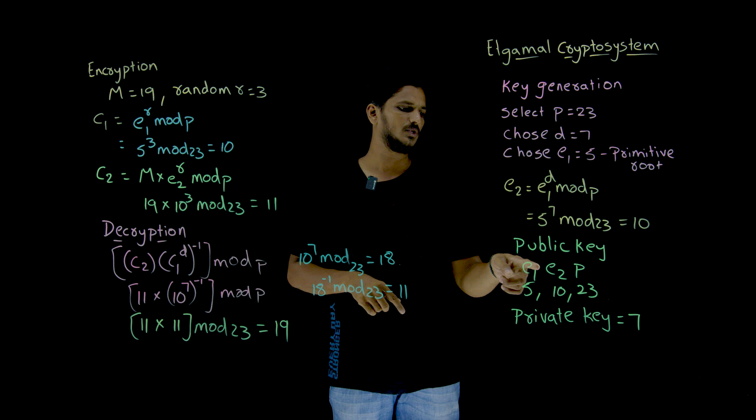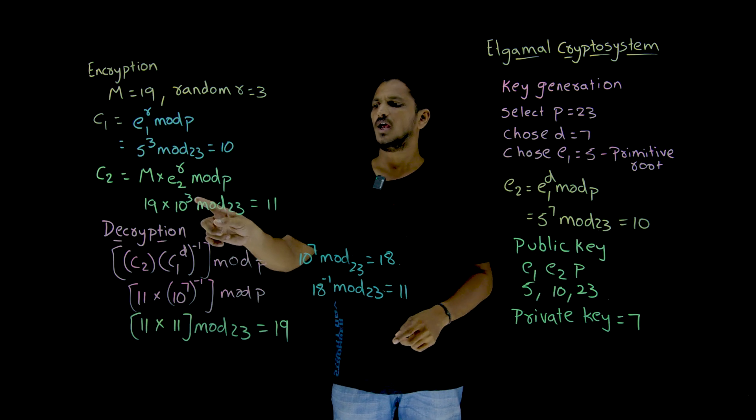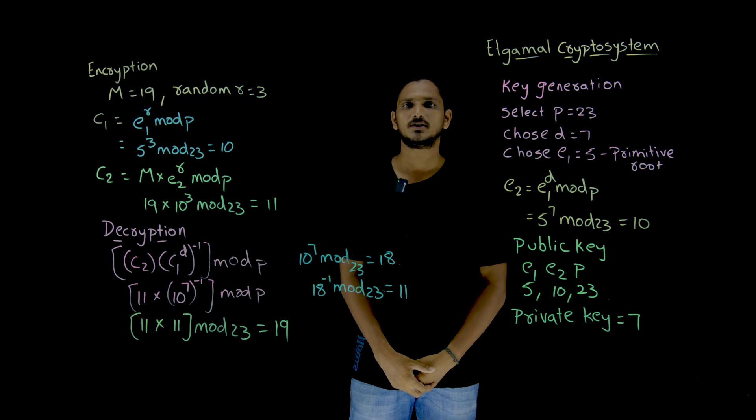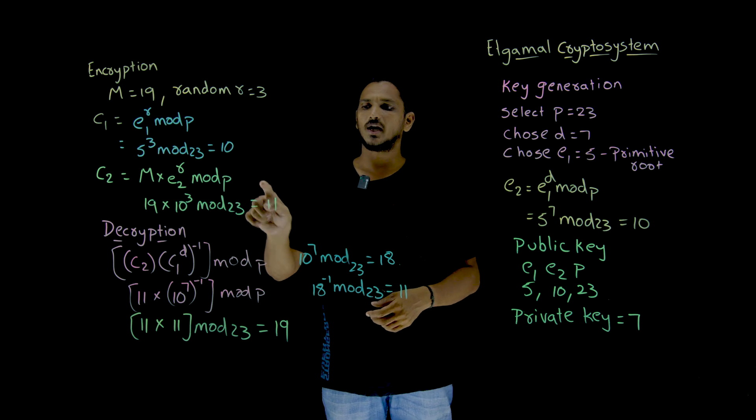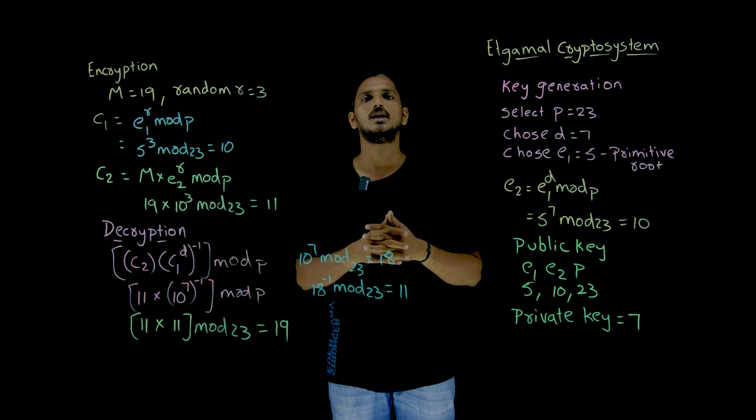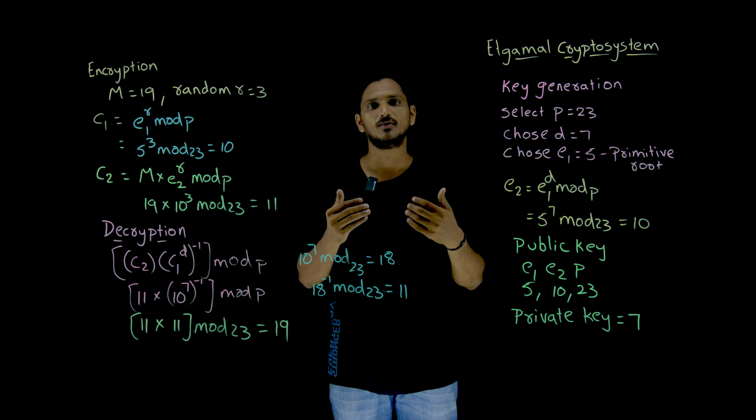Our actual message is 19. E2 means 10. E2 means the value we got here is 10. And the R value is 3. 10 power 3 mod 23, which is 11. Now 10 and 11 are sent to the decryption. Means sent to the receiver.